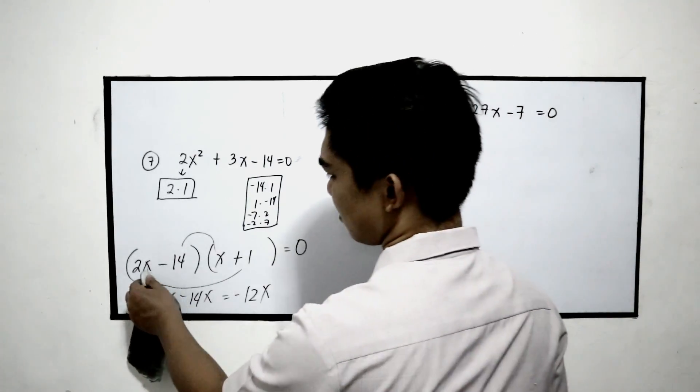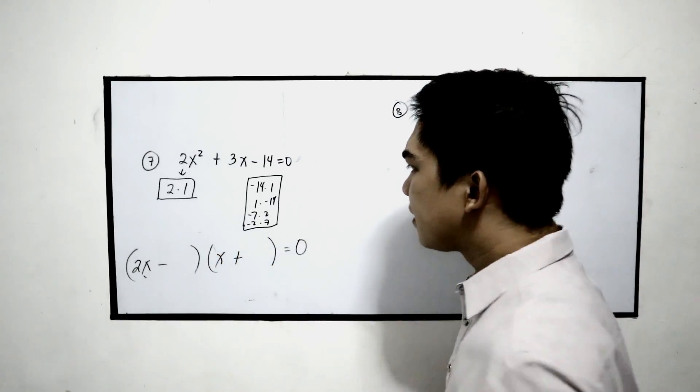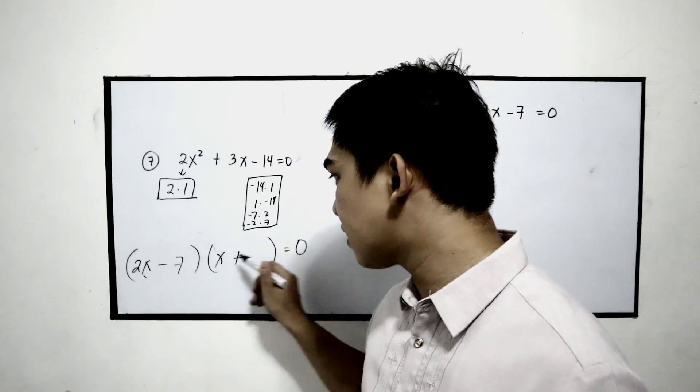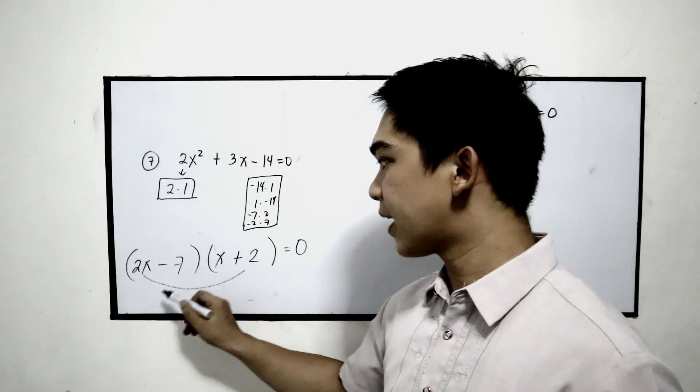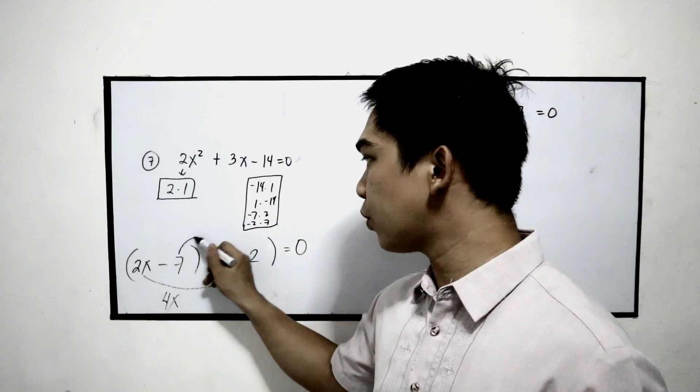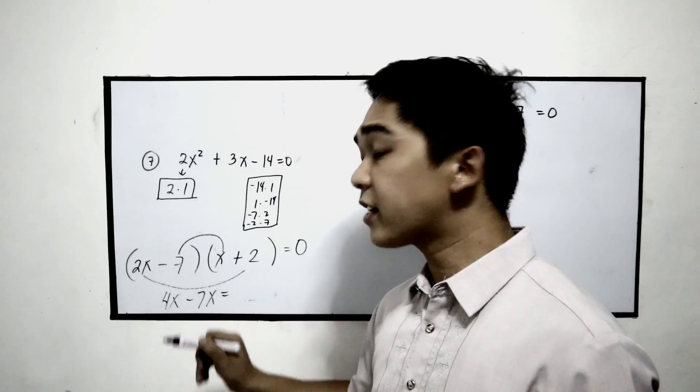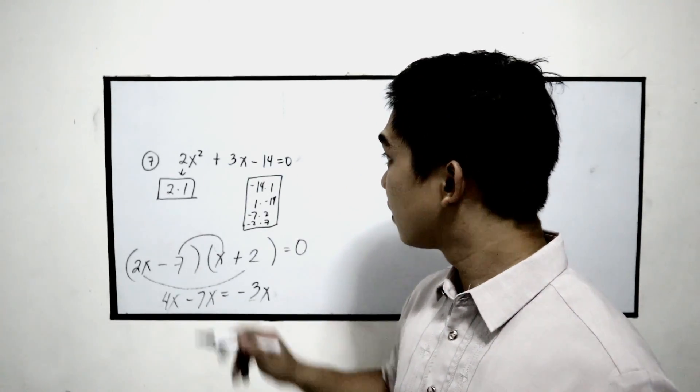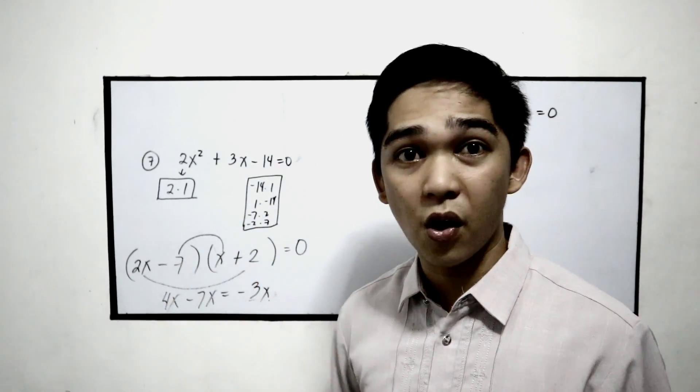So let us try again. This time, I want to try negative 7 and positive 2. Outer to outer, that is 2x times 2, 4x. Inner to inner, negative 7 times x, negative 7x. 4x minus 7x, that is negative 3x. Still, they are not equal, so these factors are also wrong.